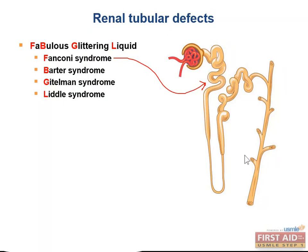Bartter syndrome is a reabsorption defect in the thick ascending loop of Henle. It's an autosomal recessive mutation of the NA-K-2Cl cotransporter, and it results in hypokalemia and metabolic alkalosis, similar to what you would see with a loop diuretic.